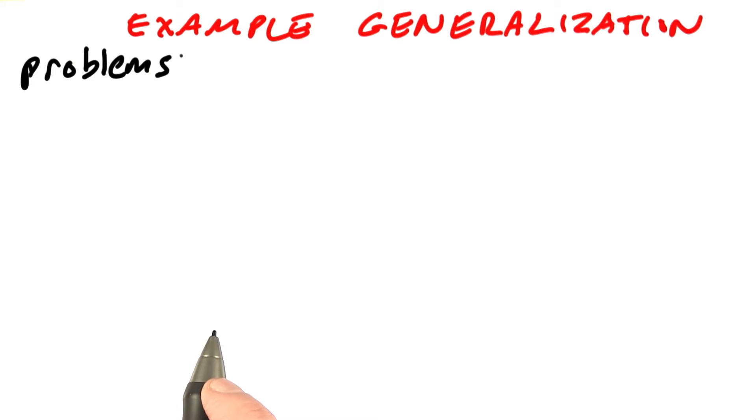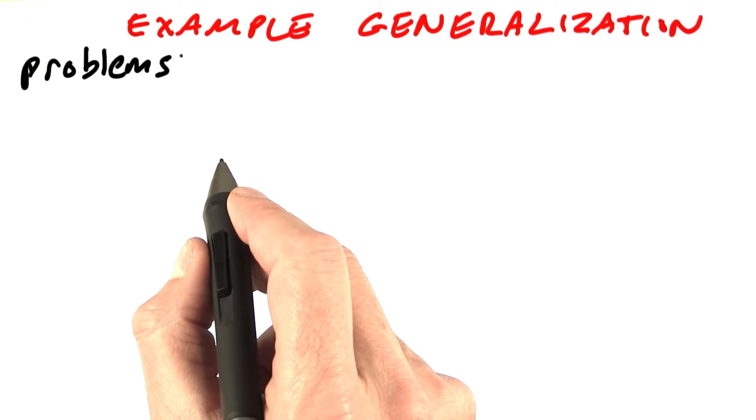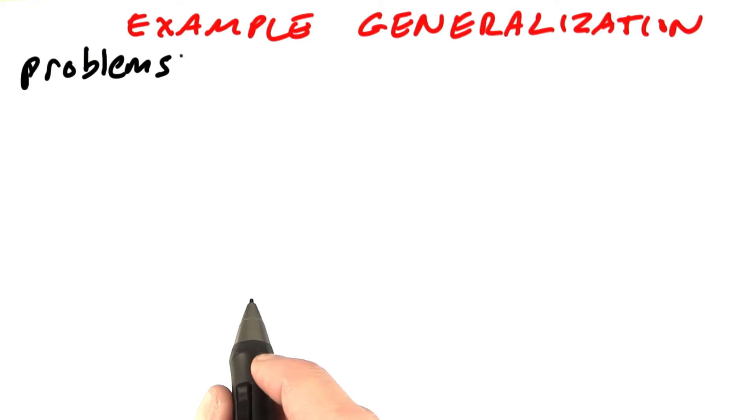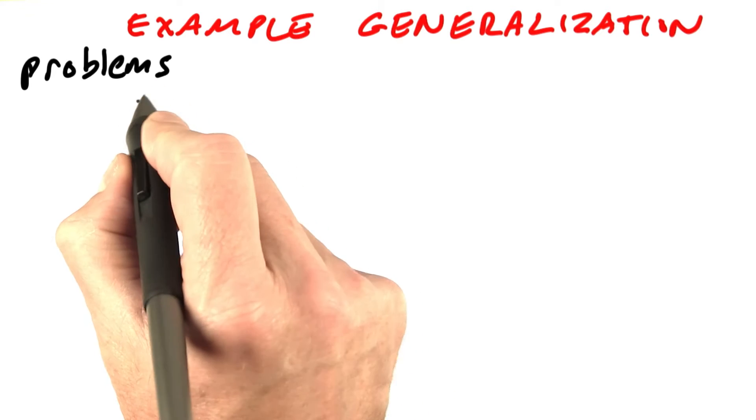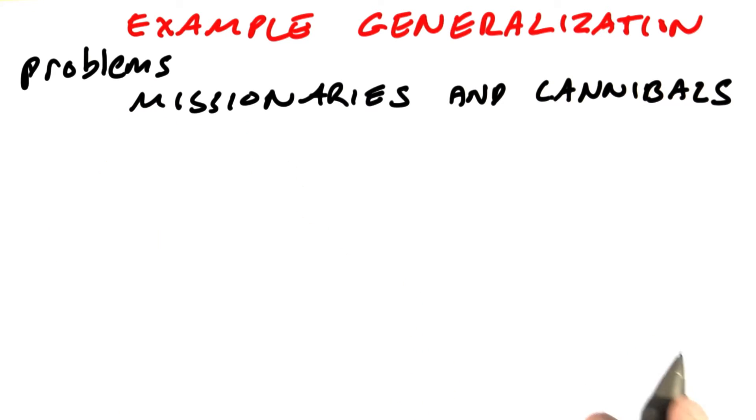Rather than have a problem dealing with costs, which we saw were complicated, let's just do a problem where we're finding the shortest path, that is, the least number of steps to a solution. I'm going to choose a classic problem called the missionaries and cannibals problem.